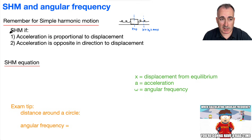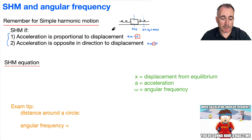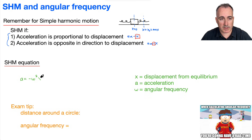Remember that the definition of SHM is that the acceleration is proportional to the displacement. That means we have this equation: a is proportional to minus x. If it's proportional, that's the x here, and if it's opposite in direction, then we're considering the minus. So we have the equation a equals minus omega squared times x.